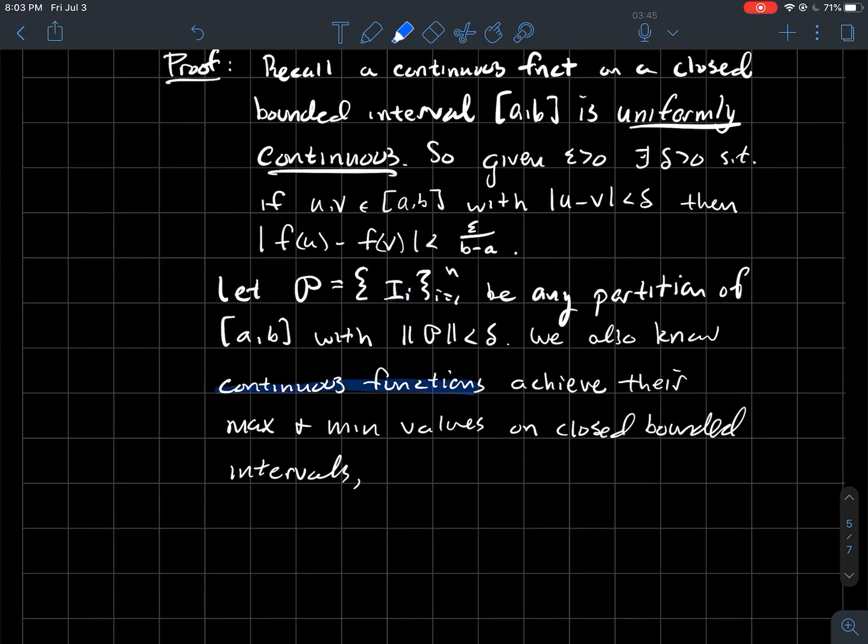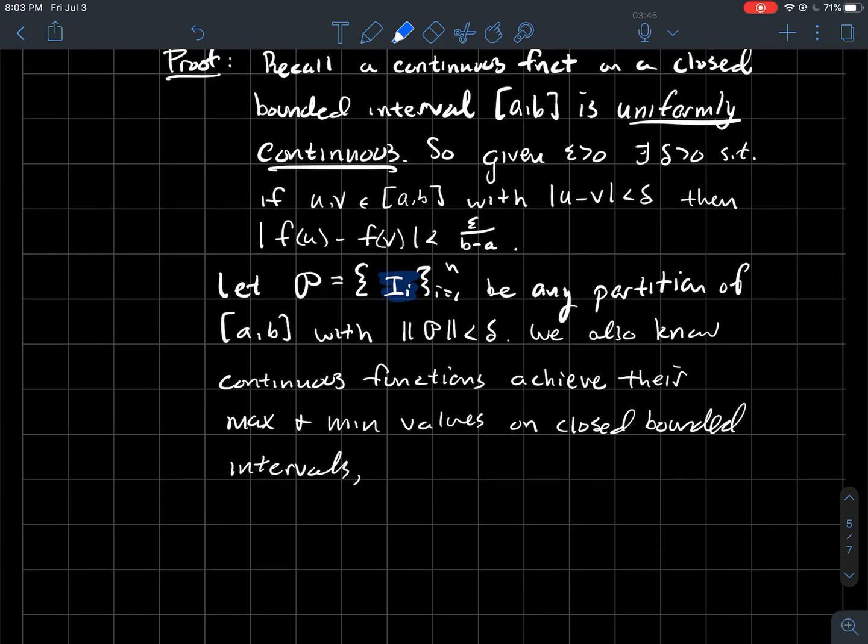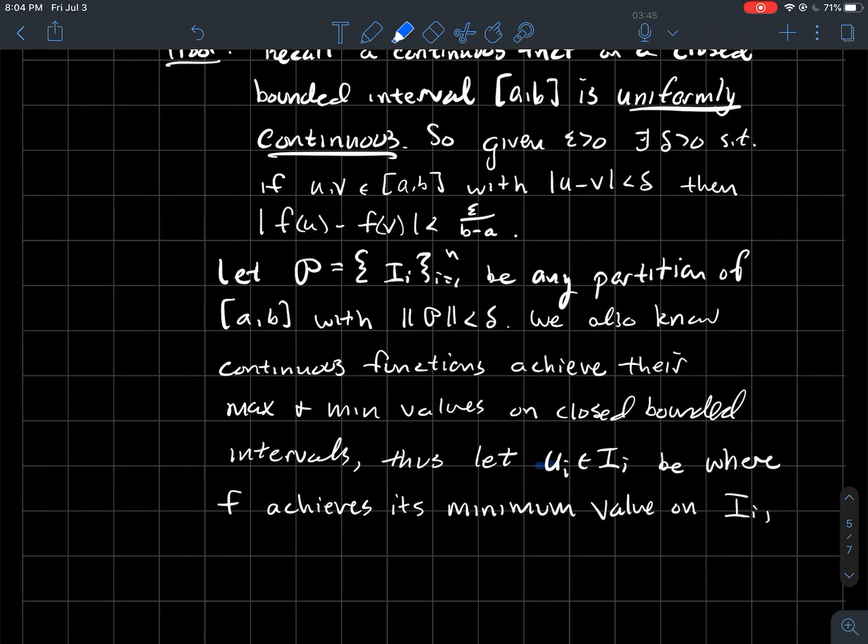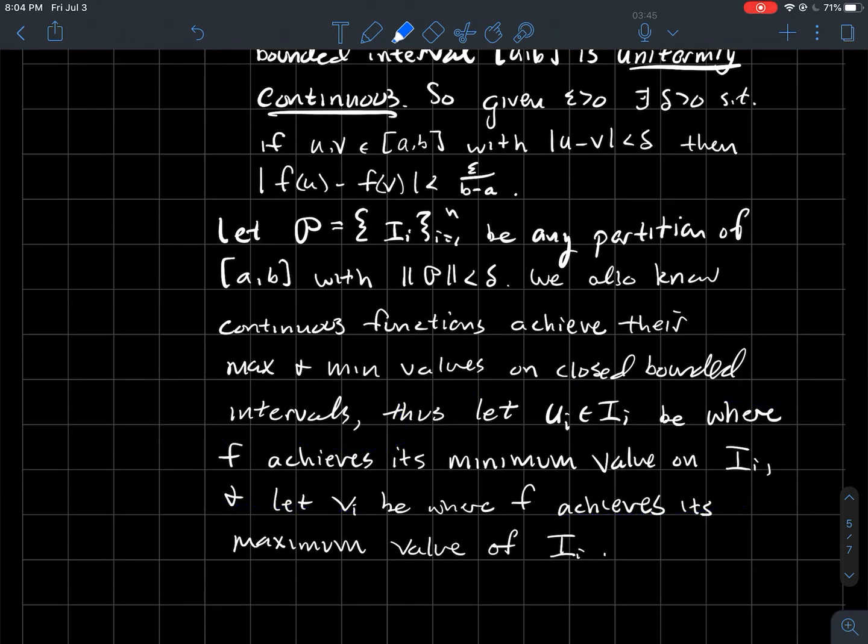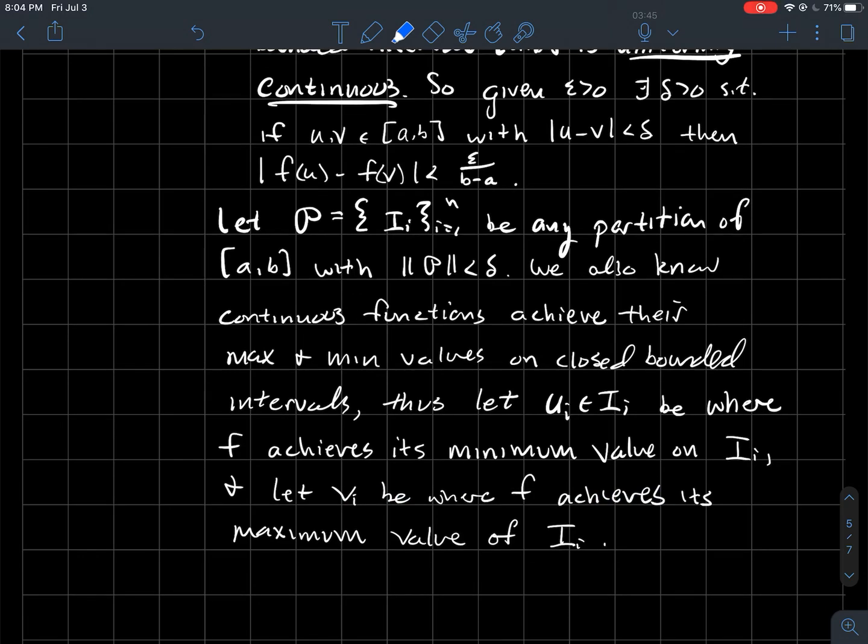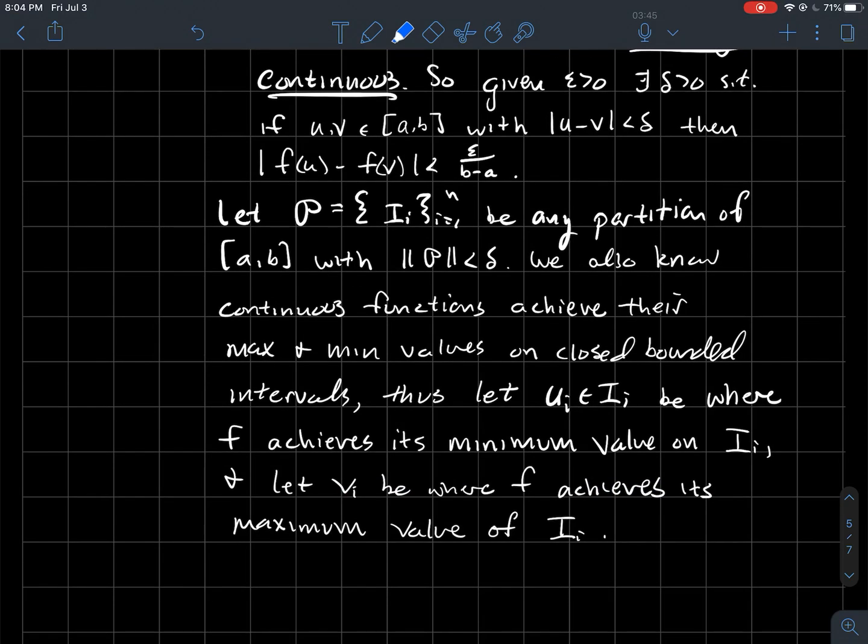Well, remember that continuous functions always achieve their maximum and minimum values on a closed bounded interval. So what we're going to do is apply that to each one of these sub-intervals. Sure, you could apply it to the whole interval AB, but what I really care about is looking at each of these sub-intervals, looking at the function's behavior on each sub-interval. So what we're going to do is let UI be the point that's in the sub-interval II where F achieves its minimum value, and let VI be the point in the sub-interval II where F achieves its maximum value. So I'm looking at each sub-interval, looking at what is the smallest value of F in that sub-interval and what is the largest value of F in that sub-interval. The smallest one is denoted by UI, or where it happens rather, and the input for which the function achieves its maximum value is VI.